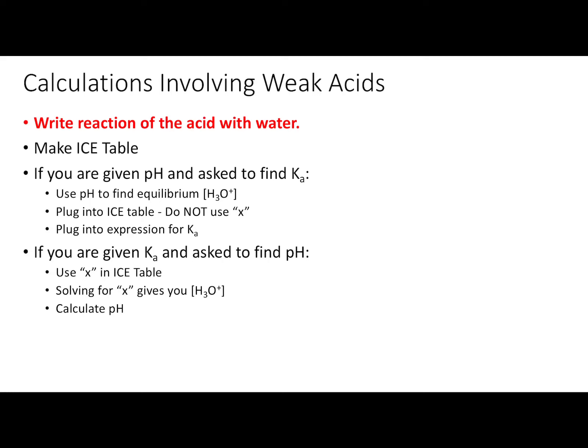We'll look at two types of problems today. The first type: if you are given the pH and asked to find the Ka, then you will use the pH to find the equilibrium concentration of H3O+. You'll plug that value, as well as the unknown initial values, into the ICE table. In other words, you won't use an X — you will solve for the equilibrium concentrations using stoichiometry.